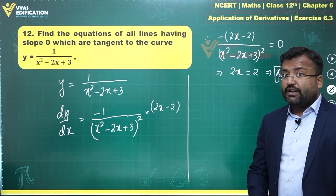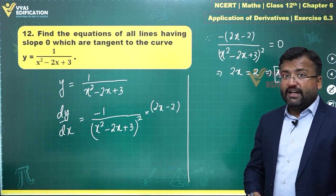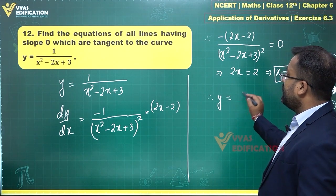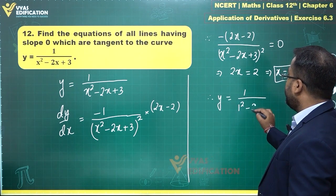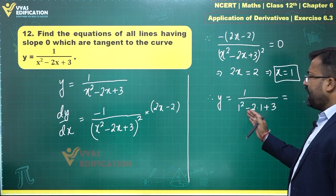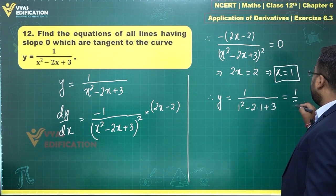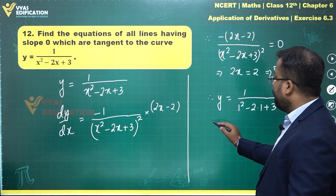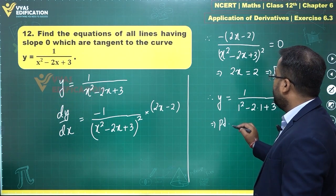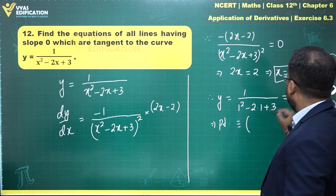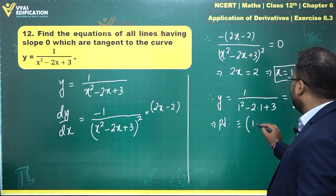With the help of this I can easily get the point. I already have the slope, I can get the point easily. x equals 1 implies y equals 1 over 1 squared minus 2 times 1 plus 3. What is that? 3 minus 2 is 1, plus 1 is 2. This is 1 upon 2. The value of y comes out to be 1 upon 2.